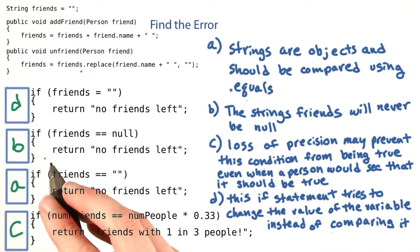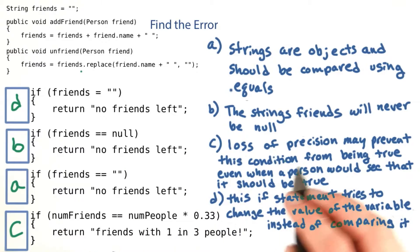The first one is D, the second one is B, the third one is A, and the fourth one is C.